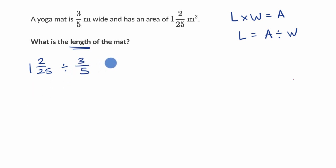Now this is going to be the same thing as, let me write this as an improper fraction. It's going to be easier to do some arithmetic with it. So one is the same thing as 25-twenty-fifths plus two-twenty-fifths. This is 27-twenty-fifths divided by three-fifths.